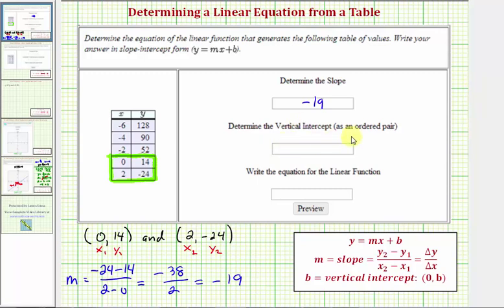Now we want to find the vertical intercept and enter as an ordered pair. The vertical intercept would be the point zero comma b. So looking at our table, we're fortunate here because notice how we're given the point zero comma fourteen, which we use down here below. Therefore, this point is the vertical intercept because the point zero fourteen is on the vertical axis or the y axis.